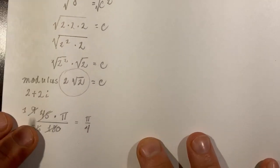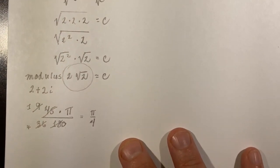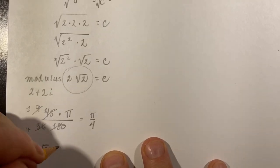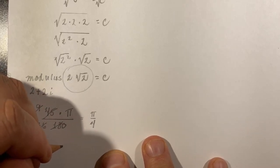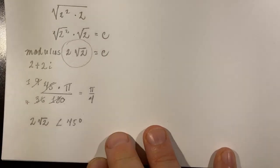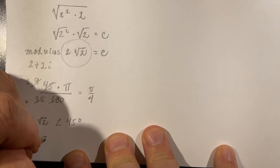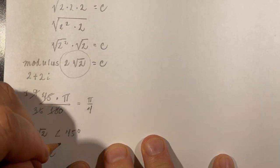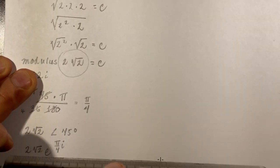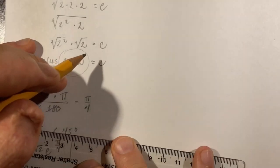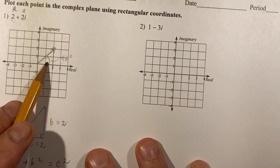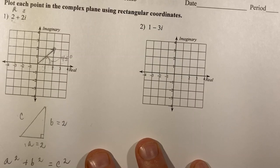So you can write imaginary numbers in something called polar form. You would write the modulus 2 square root 2, and then put the angle, which is 45 degrees. That's polar form. You can also write this in exponential form by writing 2 square root 2 times e raised to the power of pi over 4 times i. This is called the exponential form of the imaginary number. It takes into account both the magnitude of this vector and the angle of rotation counterclockwise from the horizontal axis.